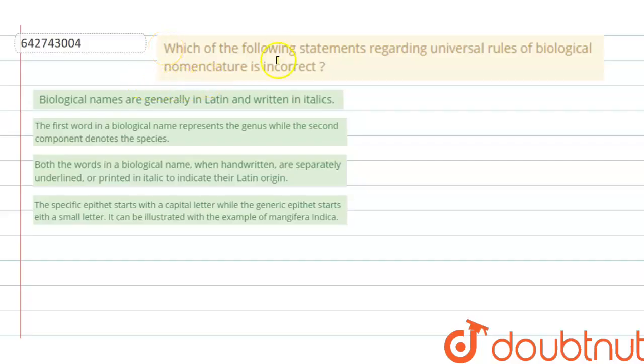The question says which of the following statements regarding universal rules of biological nomenclature is incorrect. Out of the following options, we have to check the incorrect statement. The first option says that biological names are generally